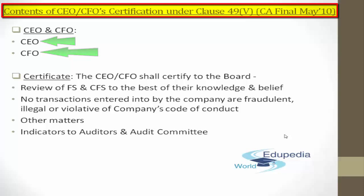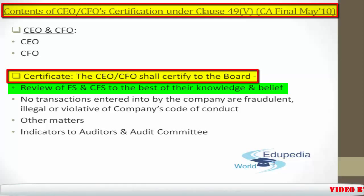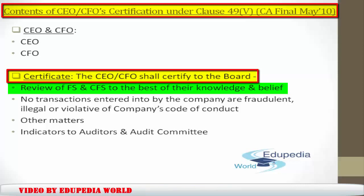Now comes the certification part. The CEO and CFO are the persons who certify to the board what they have reviewed — the financial statements and cash flow statement for the year. To the best of their knowledge and belief, the statements presented do not contain any materially untrue statement, nor have they omitted any material fact that could be misleading. These statements together present a true and fair view of the company's affairs.